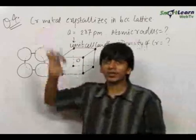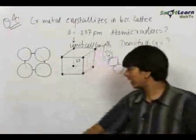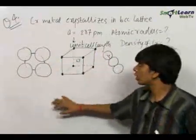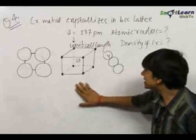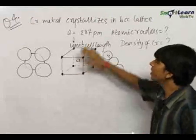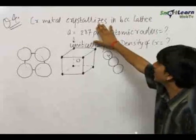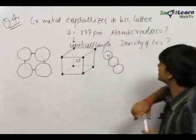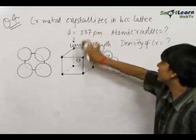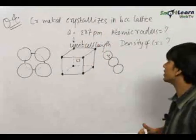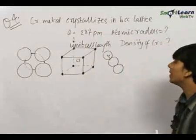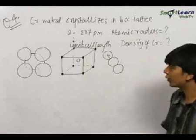The fourth question is to analyze and visualize the structure of a body-centered cubic lattice. We have been given that chromium metal crystallizes in a BCC lattice and the unit cell length is 287 picometers. We need to find out the atomic radius and the density of chromium.